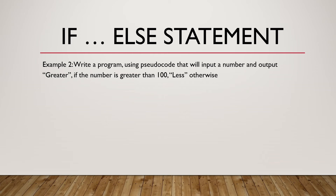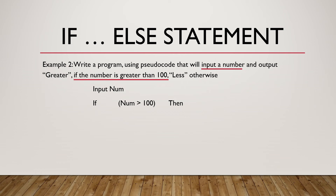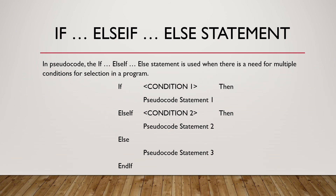Example 2: Write a program using pseudocode that will input a number and output 'greater' if the number is greater than 100, and 'less' otherwise. We'll have INPUT num, then IF num > 100 THEN output 'greater', ELSE output 'less', END IF. So if the number is not greater than 100 we output 'less'.